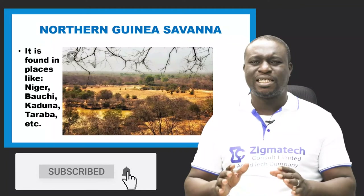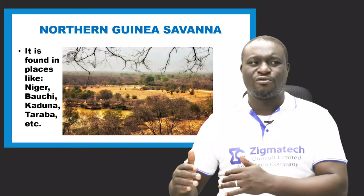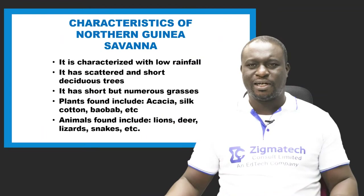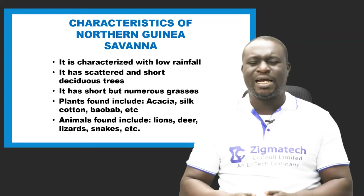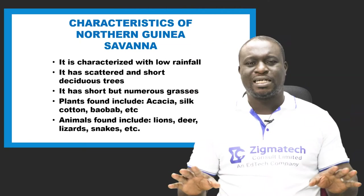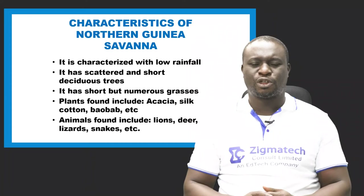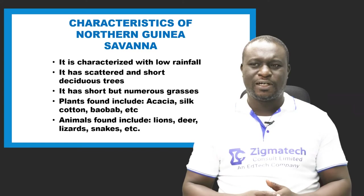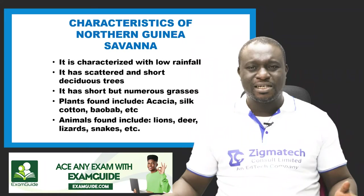The Northern Guinea savanna is located in Niger State, Bauchi State, Kaduna State, Taraba, and other states. It is characterized by low rainfall, scattered and short deciduous trees, and short but numerous grasses. Plants found here include Acacia and silk cotton trees. Animals include snakes, lions, deer, and lizards.